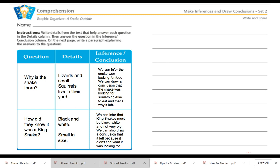Another example of how we can apply this taught comprehension skill is with the next question. How did they know it was a king snake? Well, the details in the text did tell me that this snake was black and white, and it also looked pretty small to me in size. So I'm going to take those clues, think about what I already know about possibly what other snakes look like, put those two pieces together, and make an inference that king snakes must be black and white and not very big in size. We also can draw a conclusion that the snake must have left because it didn't find what it was looking for.